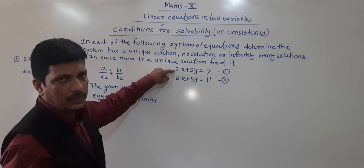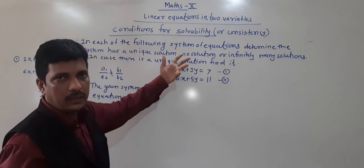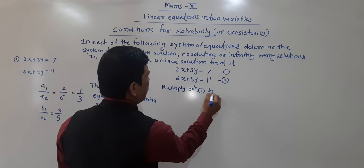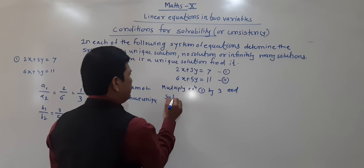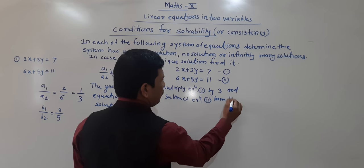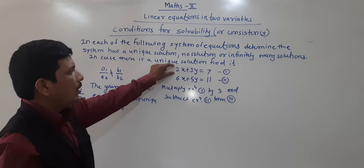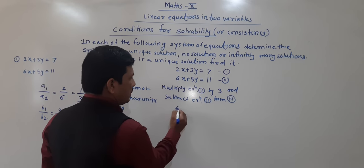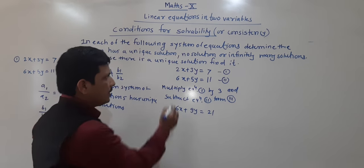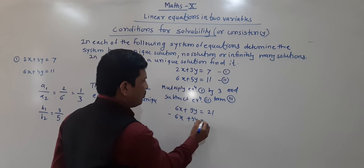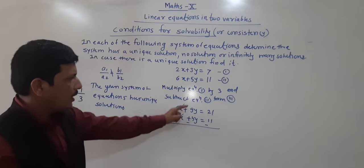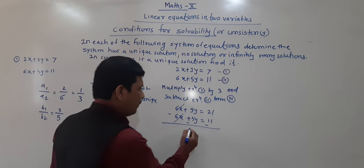We will multiply the first equation by 3 to get 6x, then subtract the second equation from it. Multiplying equation 1 by 3 gives: 6x + 9y = 21. Subtracting equation 2 (6x + 5y = 11): 6x cancels, 9y − 5y = 4y, and 21 − 11 = 10. So 4y = 10.